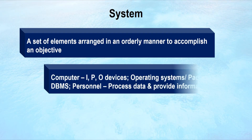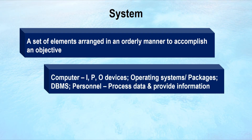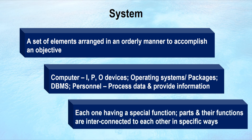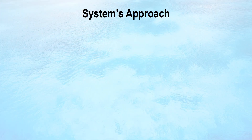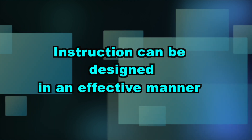Taking an example from computing: a computer system may contain input, process, and output devices. It may include an operating system, software packages, a database management system, and personnel. Its purpose is to process data and provide information. Each of these components has a specific function, and their parts and functions are interconnected in specific ways. By employing a systems approach, instruction can be designed in an effective manner.